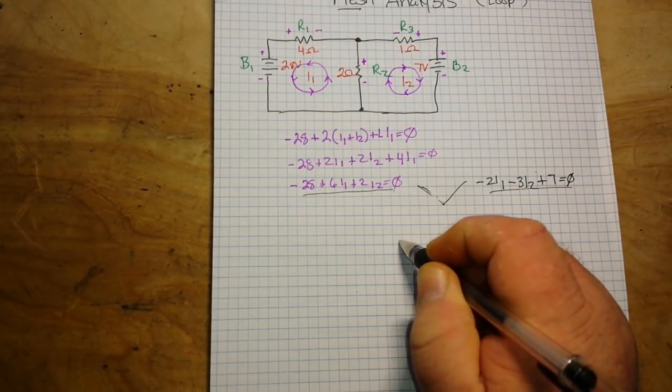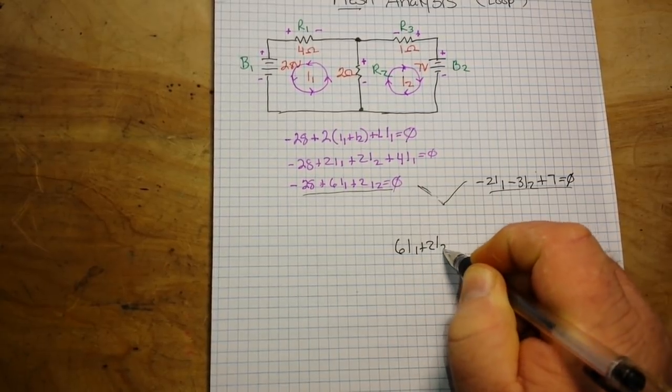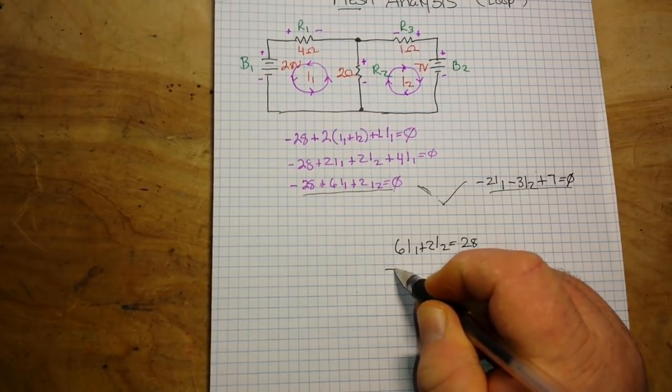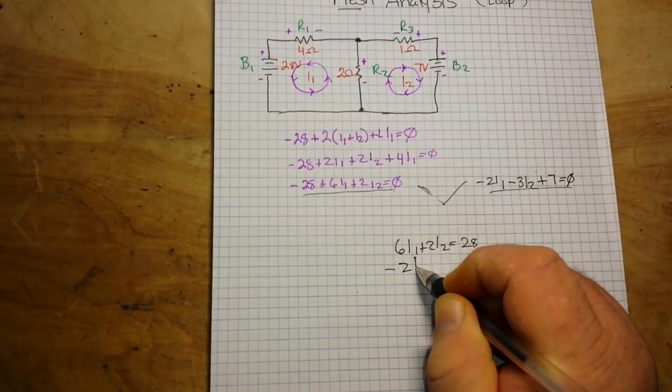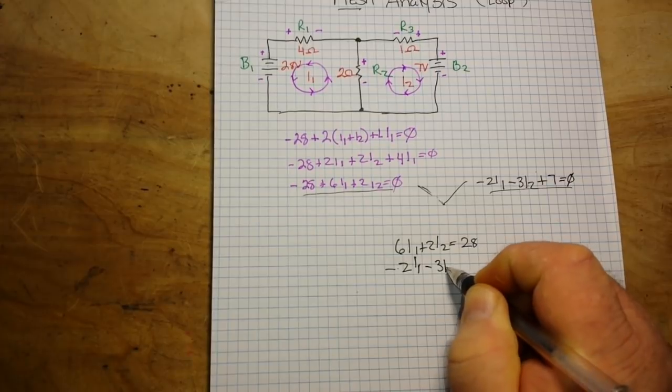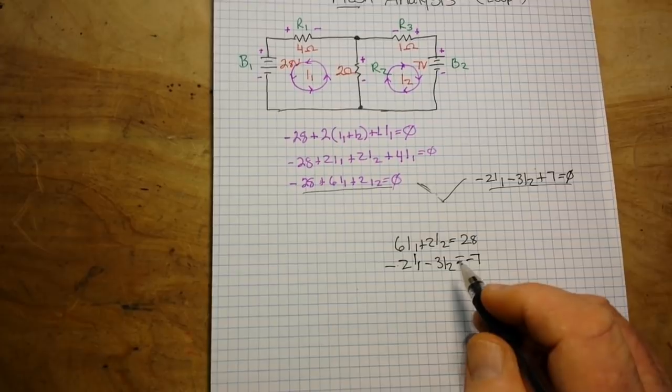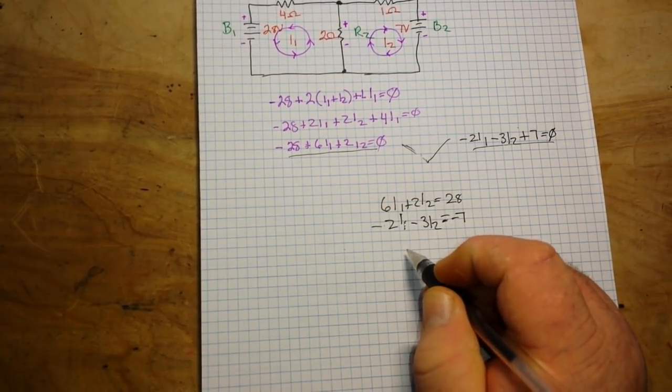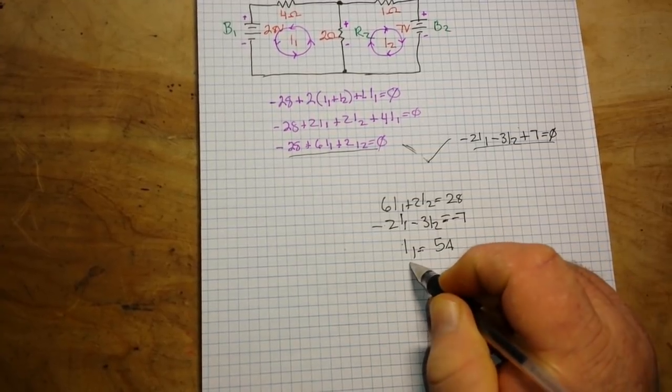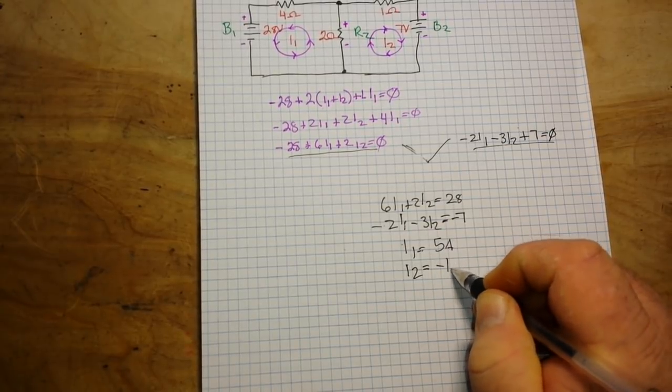We can say 6 I1 plus 2 I2 equals 28, and minus 2 I1 minus 3 I2 equals minus 7. And then we solve those two equations which is pretty simple. And we say I1 equals 5 amps and I2 equals minus 1 amp.